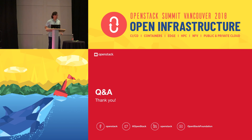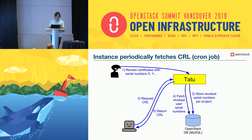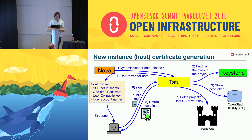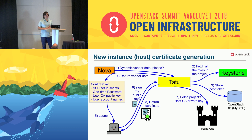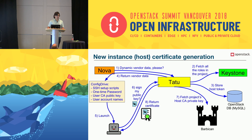Q: One of your diagrams showed about seven round trips when launching a VM — is it slower? A: The vendor data API calls are pretty fast. What actually affects launch time considerably is the init script, so the VM is not reachable for a longer time because of that, not because of the API calls.